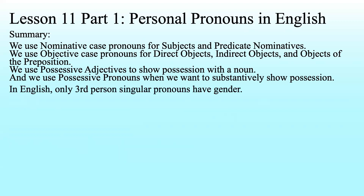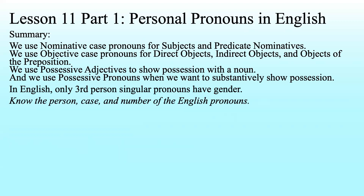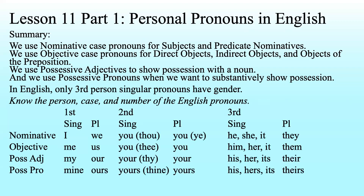Summary: We use nominative case pronouns for subjects and predicate nominatives. We use objective case pronouns for direct objects, indirect objects, and objects of preposition. We use possessive adjectives to show possession with a noun, and possessive pronouns when we want to substantively show possession. In English, only third person singular pronouns have gender. Know the person, case, and number of English pronouns. There's a handy chart you can pause to review or find at the bottom of the page on Canvas.